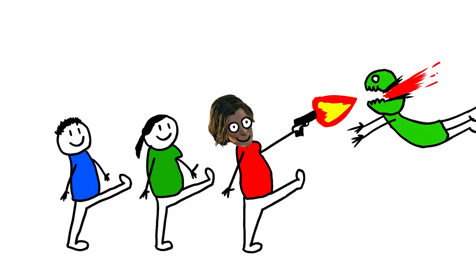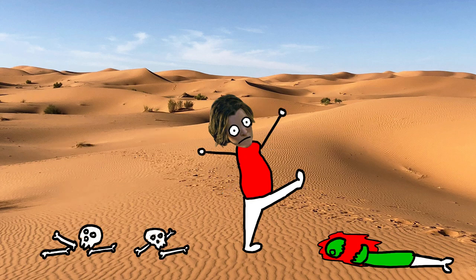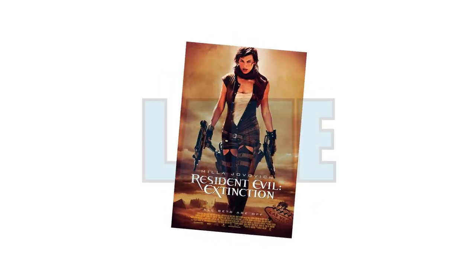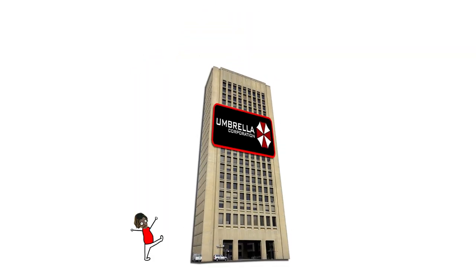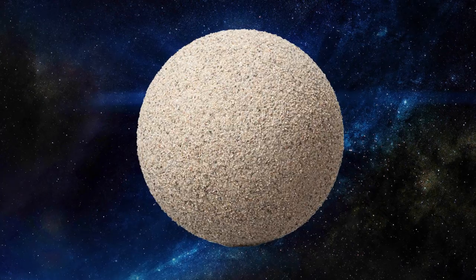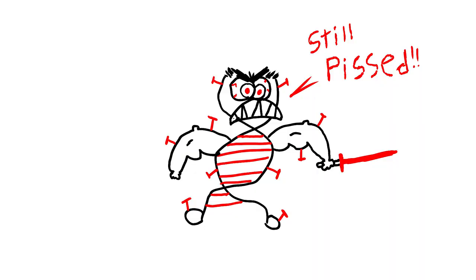In between movies, the T-virus has created a huge worldwide zombie apocalypse which has turned everything into a desert. In the third movie, Alice and some survivors are going around the desert because everywhere's a desert now. They all die and Alice doesn't. Some other survivors escape to Alaska. Not that much really happens in this movie — it was kind of a lame one. So they go into another one of Umbrella's secret underground laboratories.